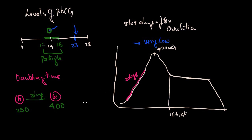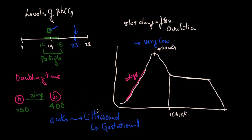Another common question is: what should beta HCG levels be at six weeks? At six weeks there is no point checking beta HCG levels — you can directly go to an ultrasound scan, where you will see the gestational sac. Some doctors even prefer a transvaginal ultrasound at five weeks to detect the gestational sac, but usually they prefer to wait until six to seven weeks for further confirmation, and by seven to eight weeks you can also see the fetal heartbeat.